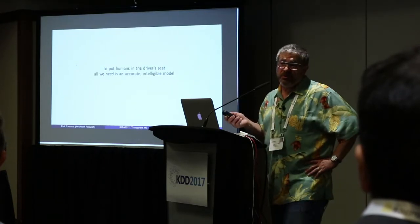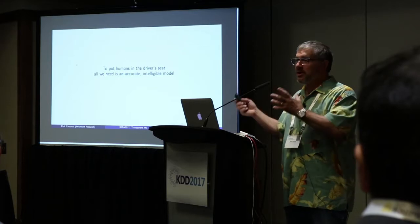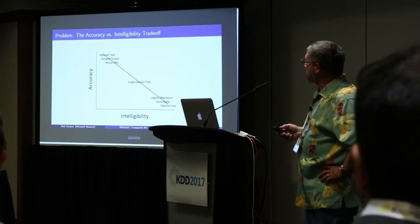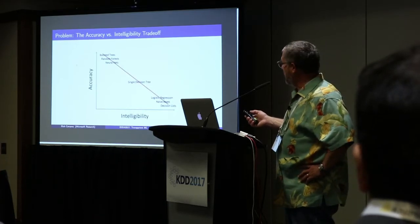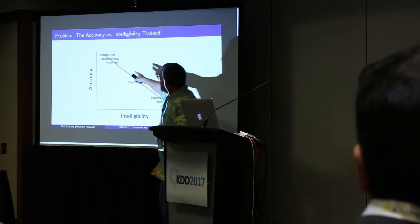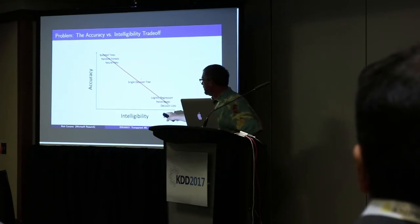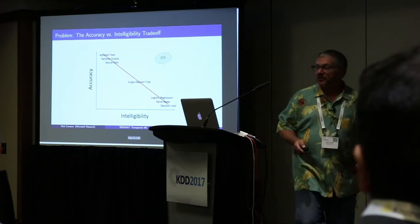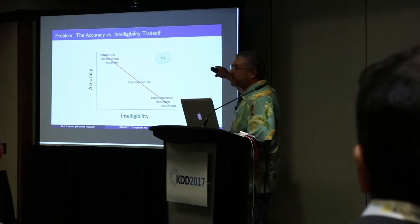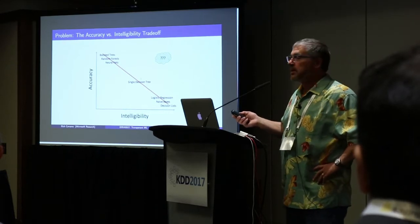All we need to do to put humans in the driver's seat is have a model that's very accurate — because of course I want to use my most accurate machine learning methods — but it's got to be very intelligible as well. We have a problem, which is that there's usually a trade-off: the most accurate methods, like boosted trees, random forests, and neural nets, unfortunately tend to be low in intelligibility. Then we have models like Naive Bayes and logistic regression, which are less accurate but very intelligible. What we really want is some magic model sitting in the upper right-hand corner — high accuracy and high intelligibility.